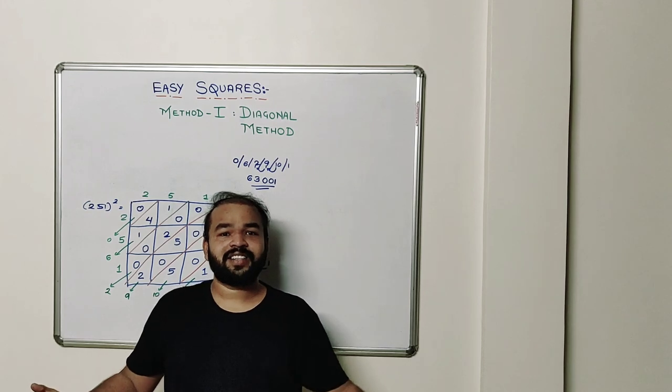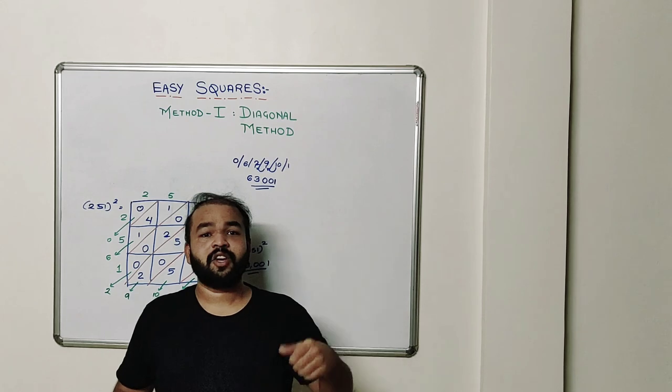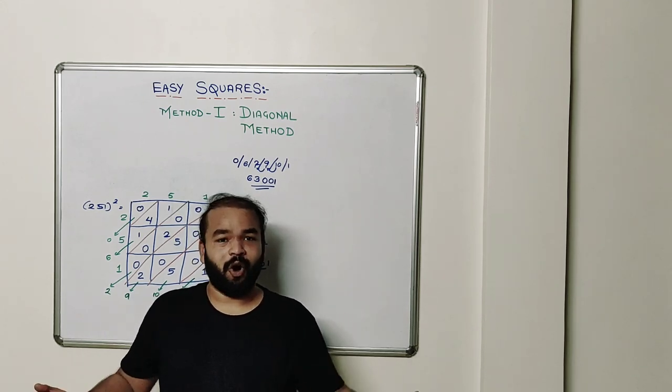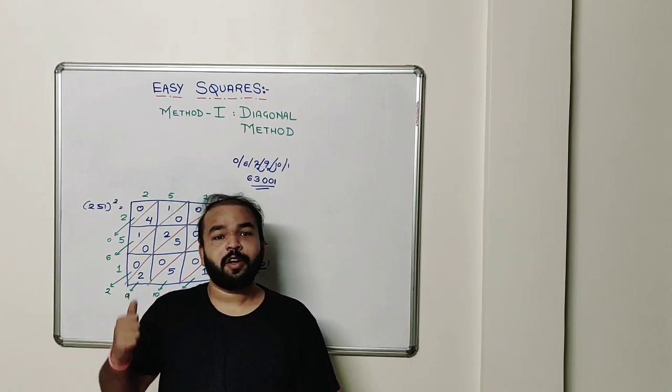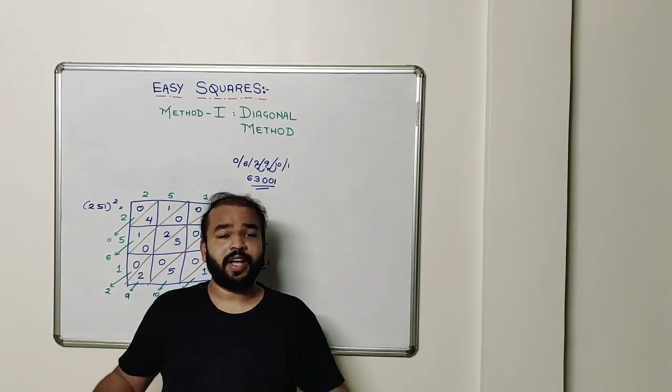So guys what do you think about the trick? Now it's easy to find the squares of a two digit number or of a three digit number by using the diagonal method. So comment down what did you feel about the trick.